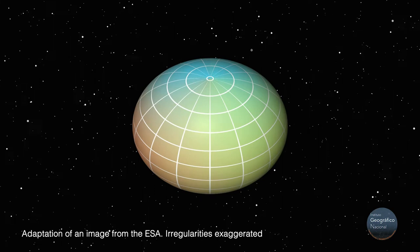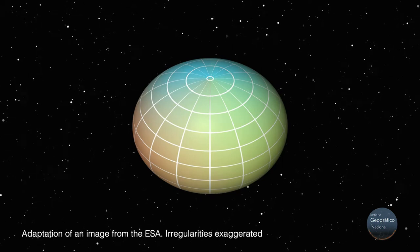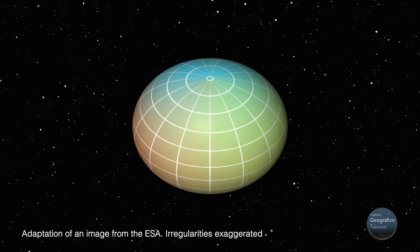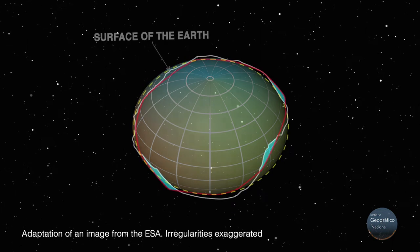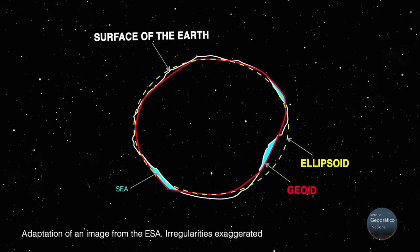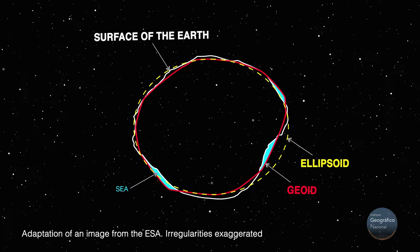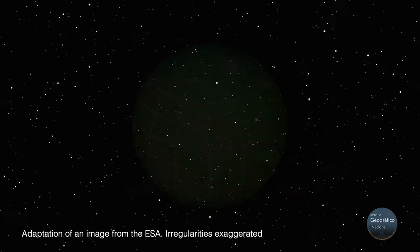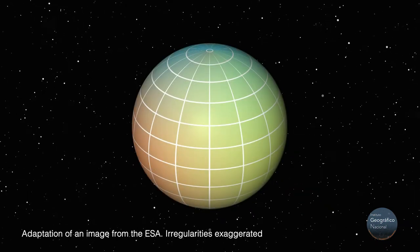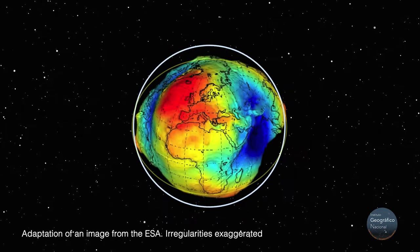In practice, an ellipsoid is often used as the fictitious surface. This shape is the result of the rotation of an ellipse around one of the axes passing through its centre. In some cases, a sphere is also used, although it does not fit the Earth's shape as well as an ellipsoid does.